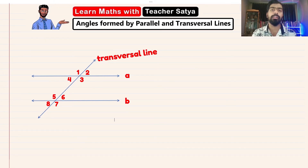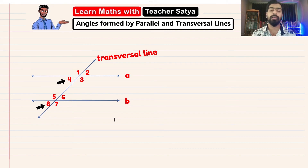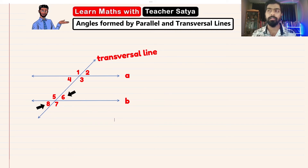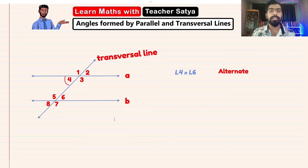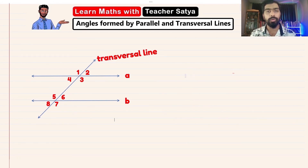Finally, let's find the alternate angle for angle 4. First, find the corresponding angle — angle 4 is corresponding to angle 8. Then find the vertically opposite angle — angle 8 is vertically opposite to angle 6. Therefore, angle 4 is the alternate interior angle of angle 6. And that is how angles are formed when a transversal line intersects two or more parallel lines.